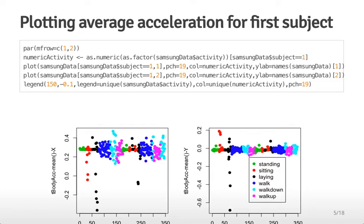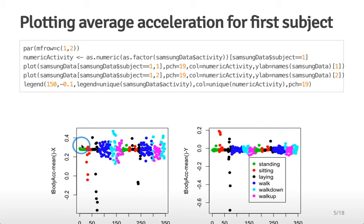The first thing we can do is look at some of the variables themselves. I created a numeric vector for the different activities: one is standing, two is sitting, three is laying, four is walking, five is walking down, and six is walking up. I then take the data for just the first subject and plot the first variable — mean acceleration in the x-axis — colored by activity. You can see that when a person was laying or standing still there wasn't much activity, whereas when they were walking down or walking up their mean activity varied a lot more. You can also plot the same variable for the y-axis.